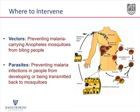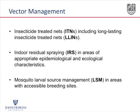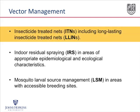On the third slide we can see three different types of interventions to manage the mosquitoes — manage the vectors. The first and probably most common is insecticide-treated bed nets that people sleep under.